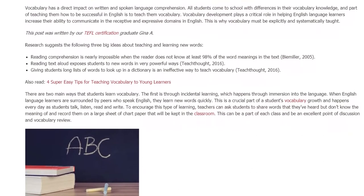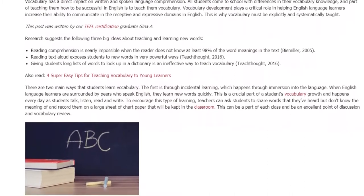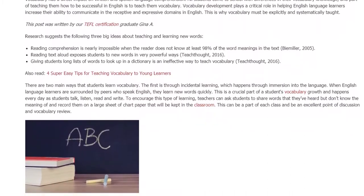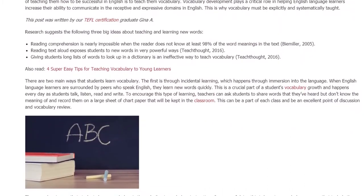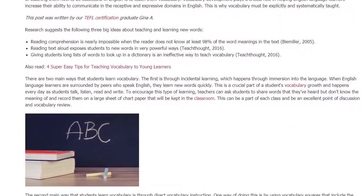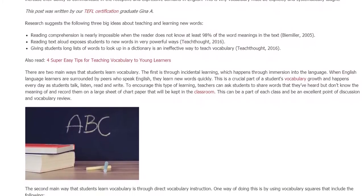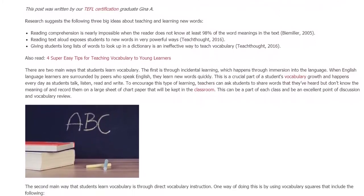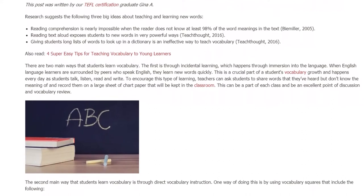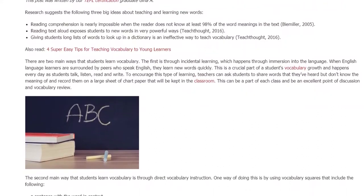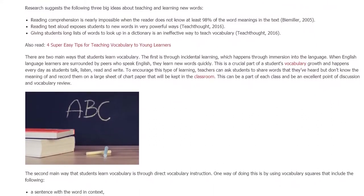This can be a part of each class and be an excellent point of discussion and vocabulary review. The second main way that students learn vocabulary is through direct vocabulary instruction. One way of doing this is by using vocabulary squares that include the following.